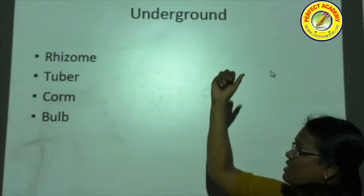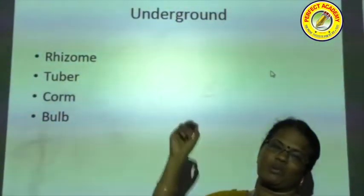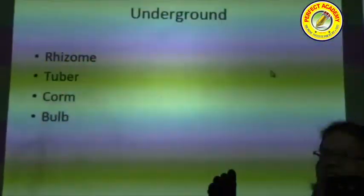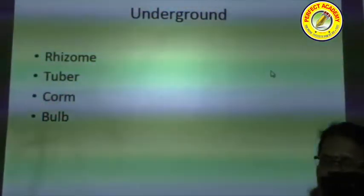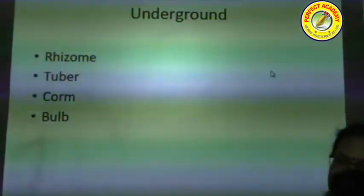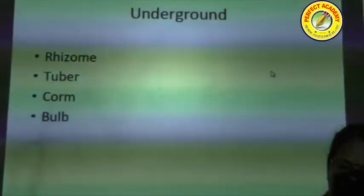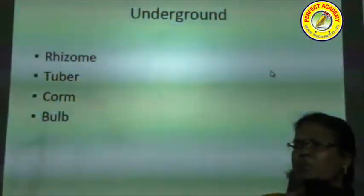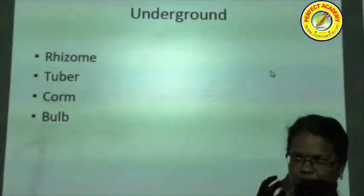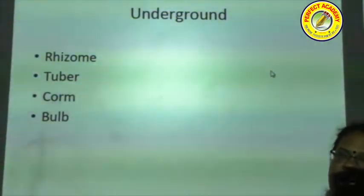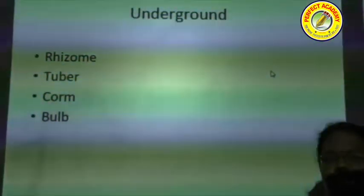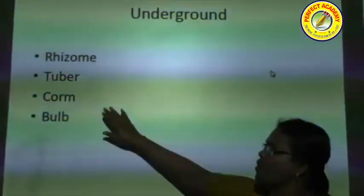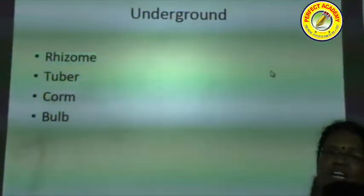The second type is the tuber — tuber means a swelling. The very good example is potato, which is a stem tuber. A common exam question asks to identify the odd one out among carrot, radish, beetroot, and potato — potato is the only stem modification; the other three are root modifications. The axillary bud is a peculiar feature of the stem tuber and supports vegetative propagation.